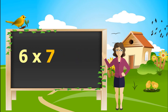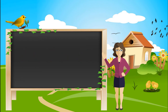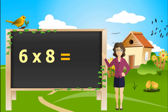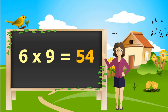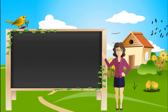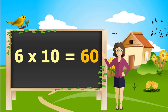6 sevens are 42. 6 eights are 48. 6 nines are 54. 6 tens are 60.